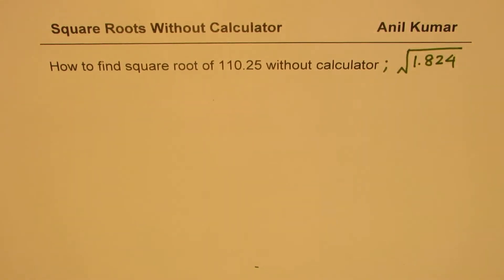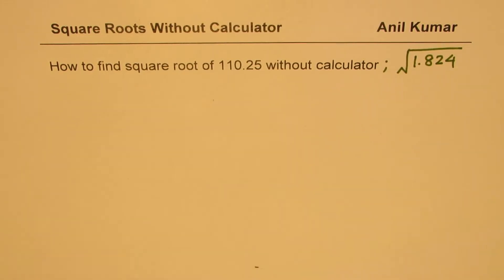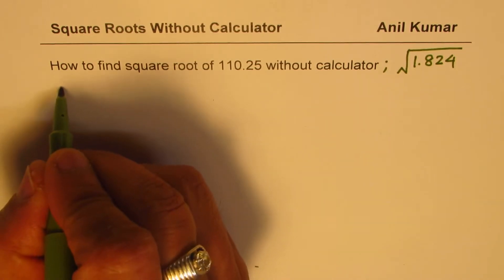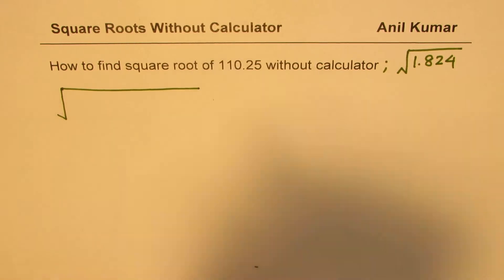Now 110.25 is a very interesting number. We could actually find square root of this number in many different ways. The answer is 10.5, but I'll continue with the standard method which I have shared with you so far. So to find square root, the first step here is to write the number in sets of 2s.